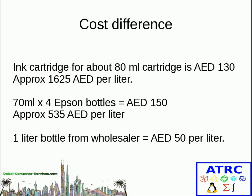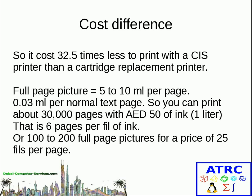Just to give you an idea: if you take an ATML cartridge, it's around 130 dirhams — that's something like $50 — and that's approximately 1,625 dirhams per liter. If you get the Epson 4 bottles for this printer, they're like 70 mL times 4, which comes to something like one-fourth at 535 dirhams per liter. But if you get a whole liter bottle from a wholesaler, you'll get it at 50 dirhams per liter.